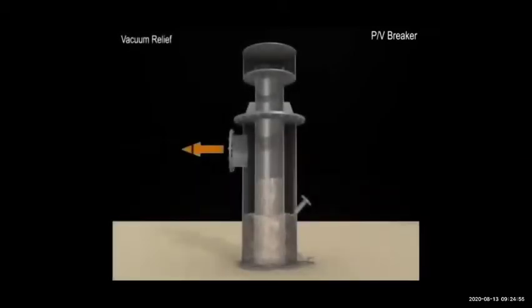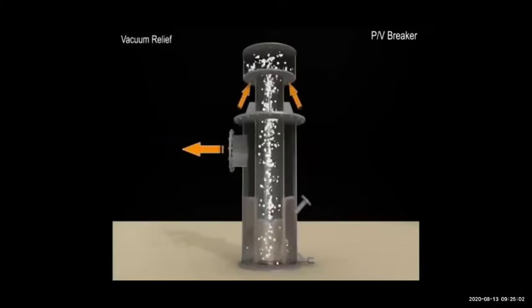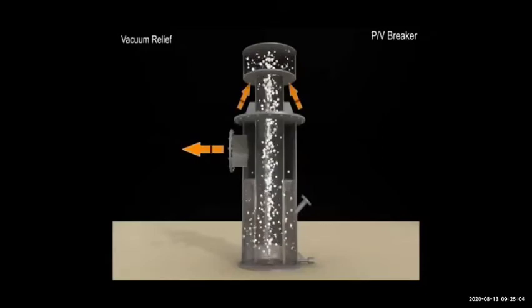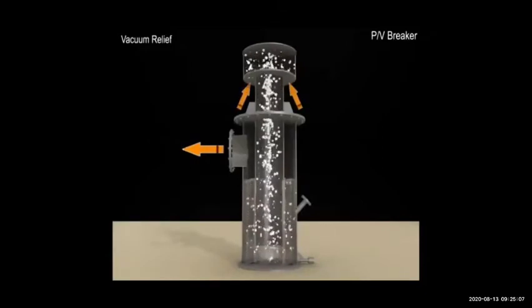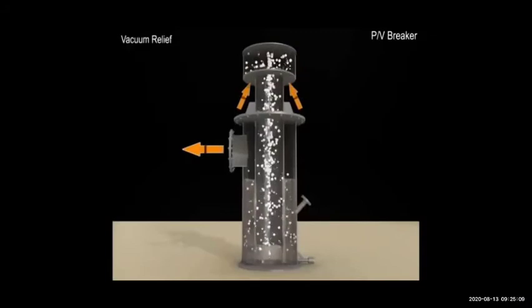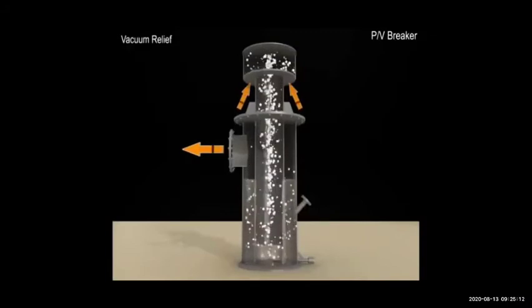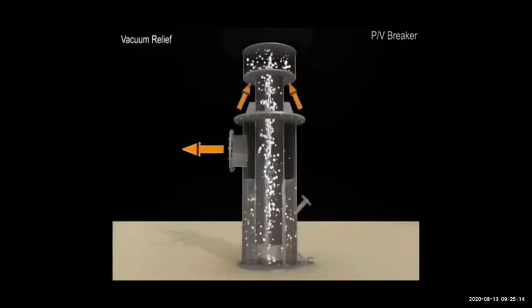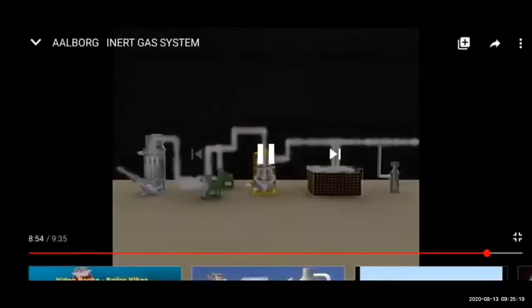If there is a vacuum in the tank — very low pressure for some reason — air will come from outside, pass through the water in the PV breaker, and go into the tank so the tank will not get ruptured. This is your inert gas system.